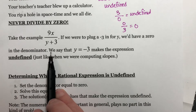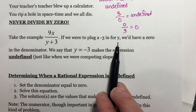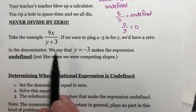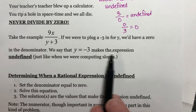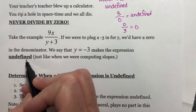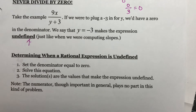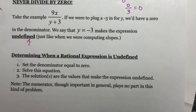So in this example, if we were to plug in negative three for y, we'd have a zero on the bottom. We say that y equals negative three makes the expression undefined. This is the same thing we were talking about when we talked about slopes — we had undefined slope when our zero was in the bottom.